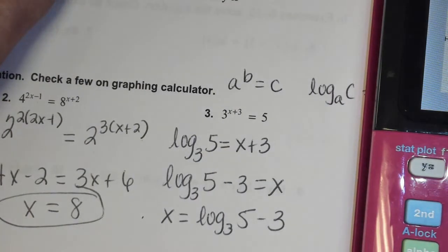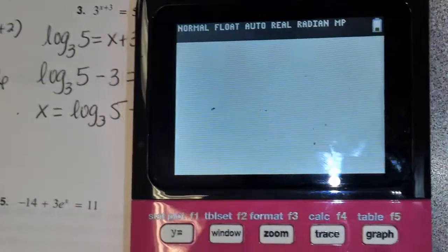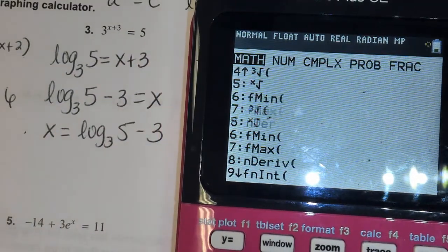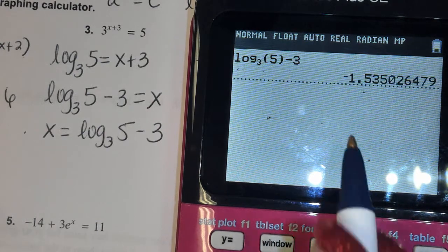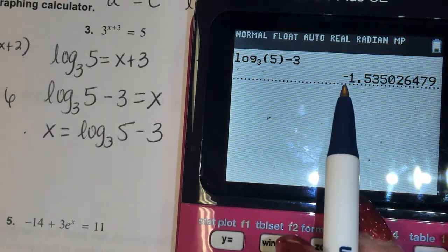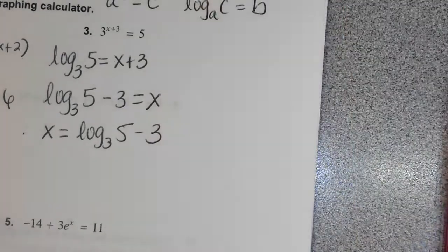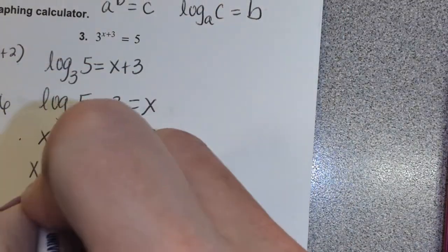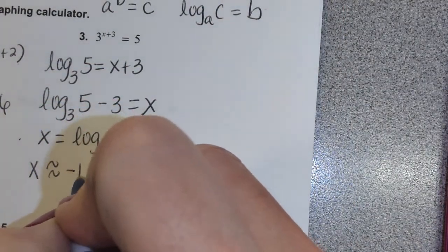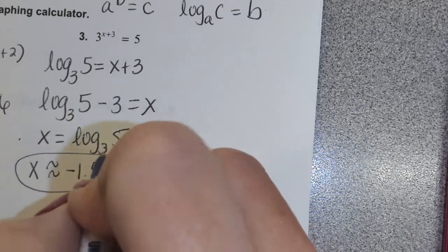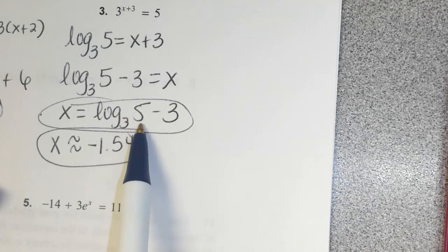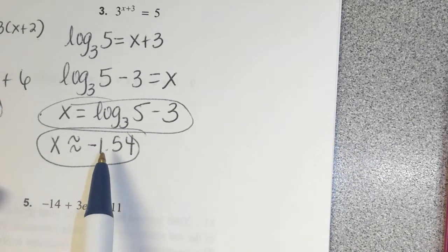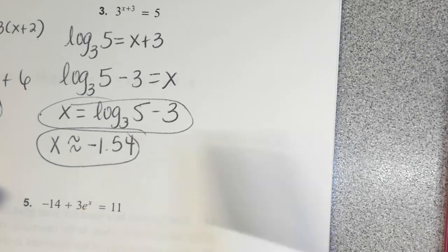If I want a decimal approximation, I can go to my calculator, go to math, go to log base, and put in log base 3 of 5 minus 3. Our approximate answer, rounded to the nearest hundredth, is negative 1.54. You'll have to read the directions on Big Ideas and on the assessments: if it asks for an exact answer, give the exact answer; if it asks for an approximate answer, this would be the approximate answer.